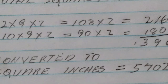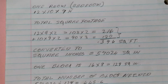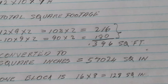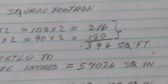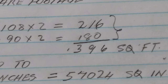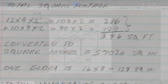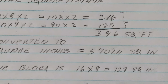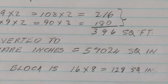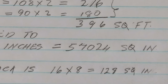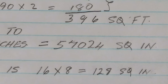The walls that are 10 by 9 give us 90 square feet. Since there are two of those walls, we multiply by 2 to get 180 square feet. Putting those four walls together, we get a total of 396 square feet. Each block is calculated at 16 inches by 8 inches, giving 128 square inches. We then convert 396 square feet into square inches by multiplying by 144, which gives us 57,024 square inches.